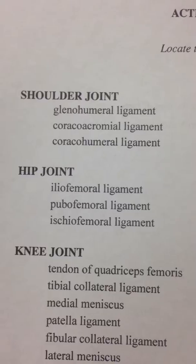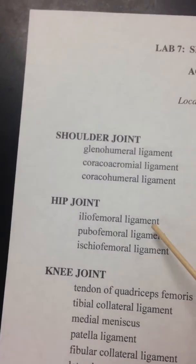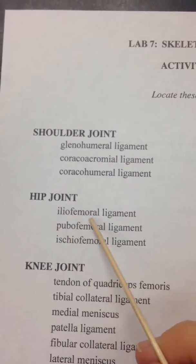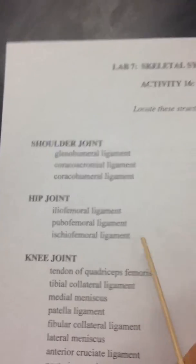The hip joint, also known as the coxial joint, the ligaments on them. We have the iliofemoral, the pubofemoral, and the ischiofemoral ligaments.